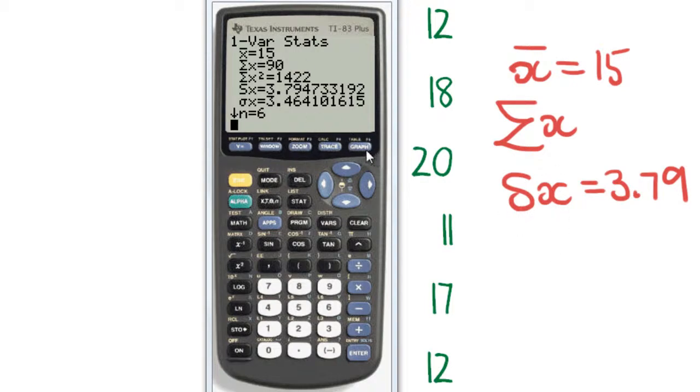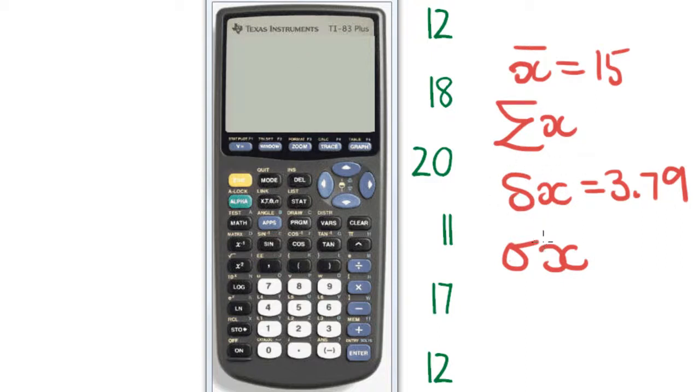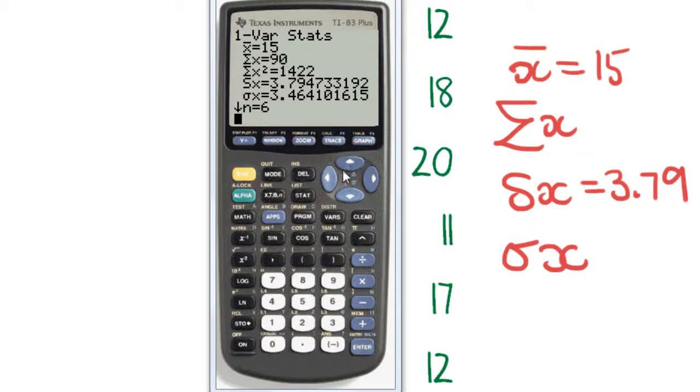The next one there, Sigma X, is also the standard deviation, but the difference between these two is s_x is the standard deviation when you're talking about a sample, and Sigma X is the standard deviation when you're talking about a population. Now most of the time, almost all the time, you'll be talking about a sample, so this is the one that we use most often. Occasionally, if you happen to have the entire population in what you're calculating, then you'll use Sigma X.